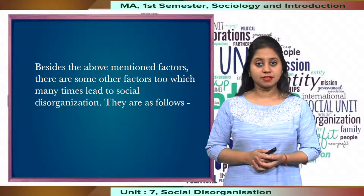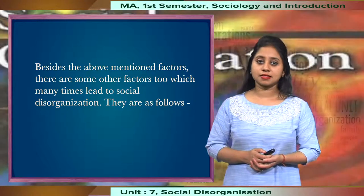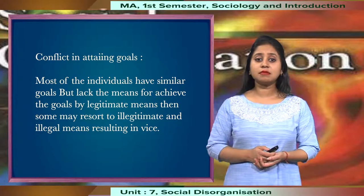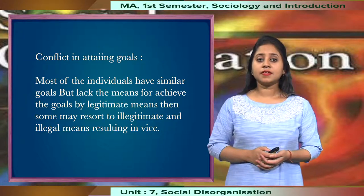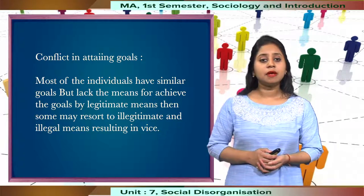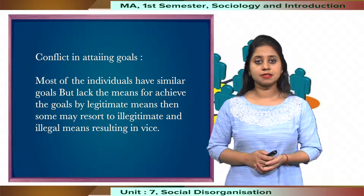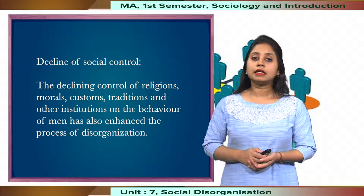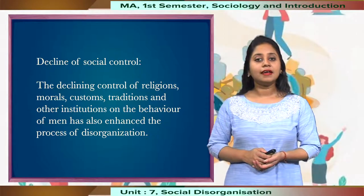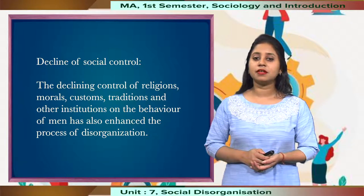Besides the above-mentioned factors, there are some others. First is conflict in attaining goals — most individuals have similar goals in society, but there is a lack of sufficient means to achieve those goals by legitimate means, so some members may resort to illegitimate or illegal means. Then we have decline in social control — the declining control of religion, morals, customs, tradition, and other institutions on the behaviour of individuals has also enhanced the process of disorganisation.